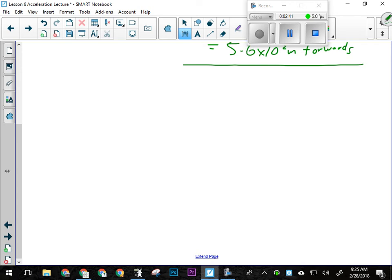If I want to solve this formula for A, I'm going to add VF times T to both sides. So D plus VFT equals 1/2 AT squared.